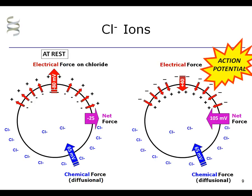Whenever chloride channels open, the membrane potential tends to be drawn toward the equilibrium potential of chloride. In a neuron, which has a chloride equilibrium of minus 65 millivolts, opening chloride channels will drive the membrane potential toward minus 65 millivolts, which results in these channels being inhibitory, because the threshold potential for the action potential is around minus 55 millivolts, which is higher than the chloride equilibrium potential. Thank you for listening.